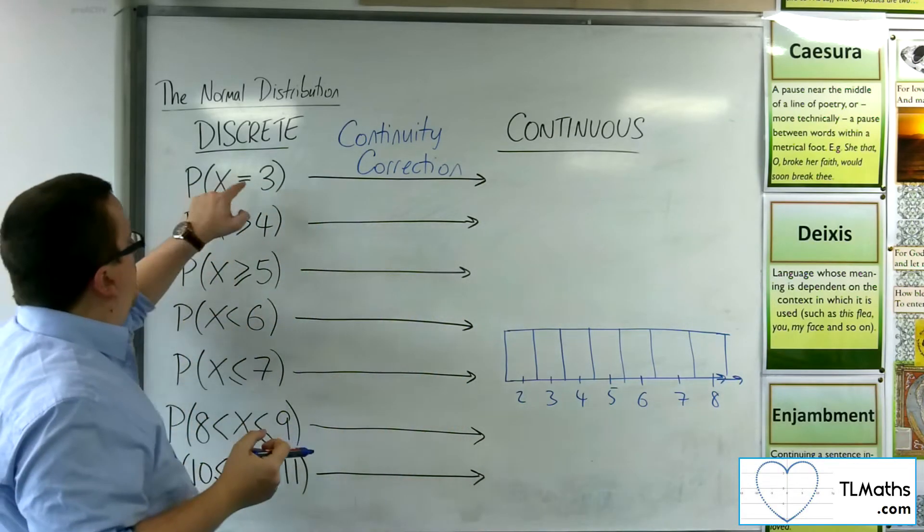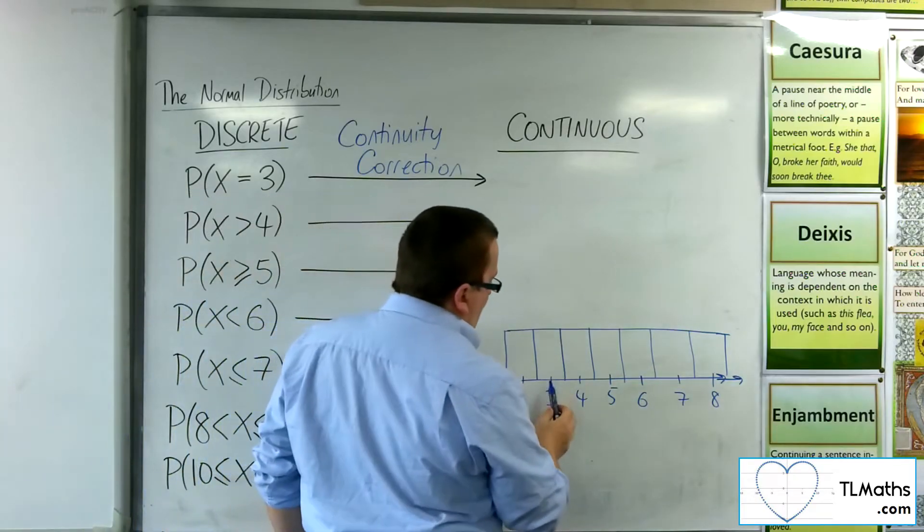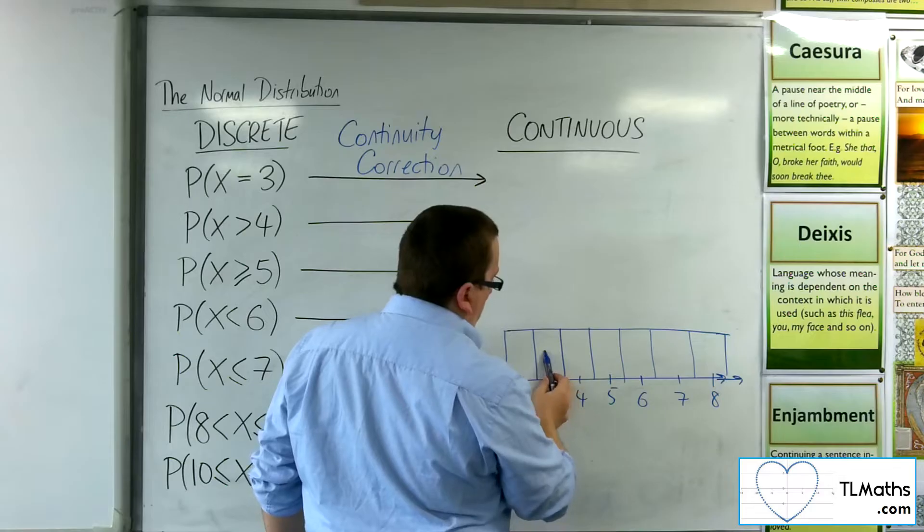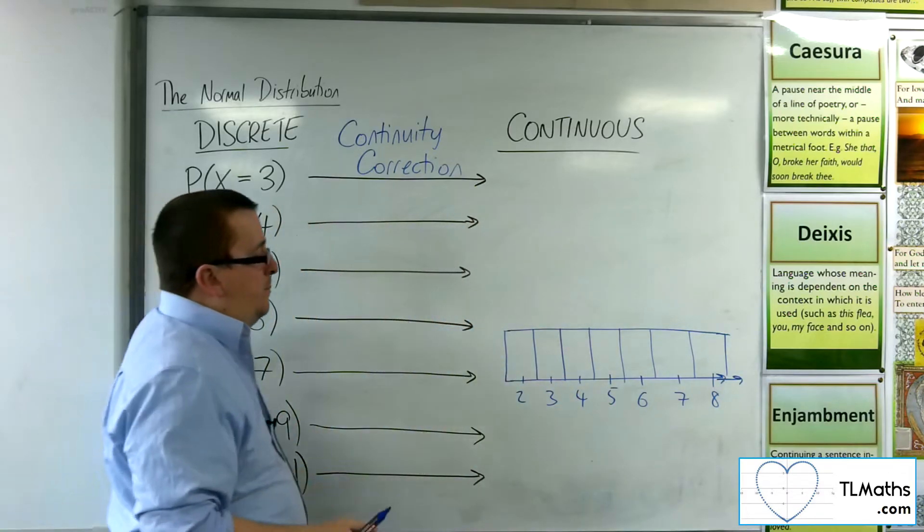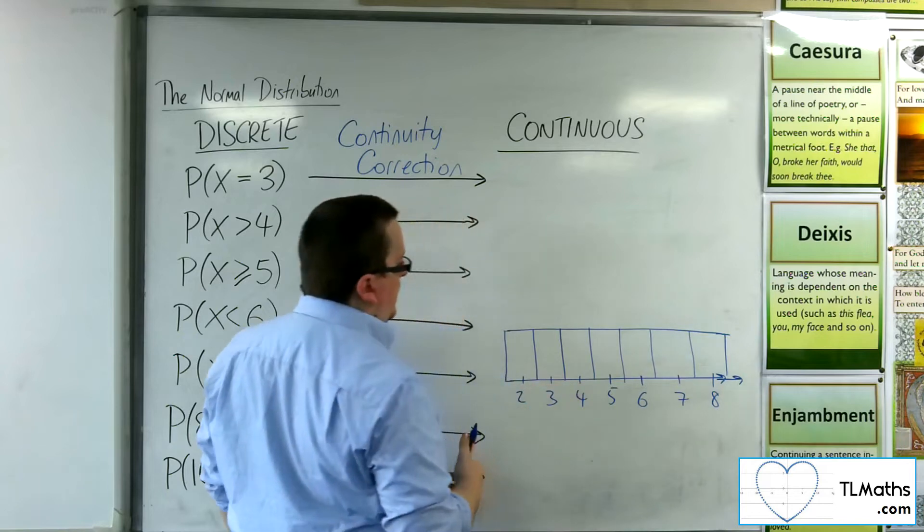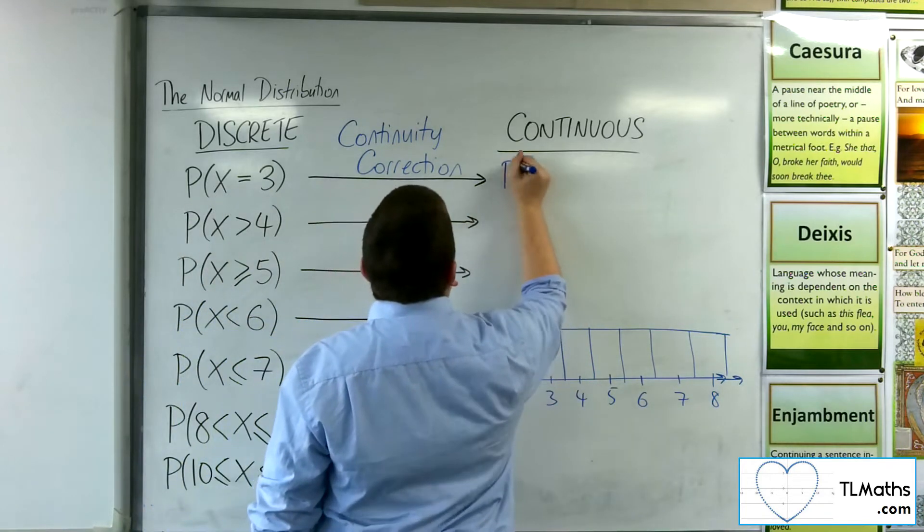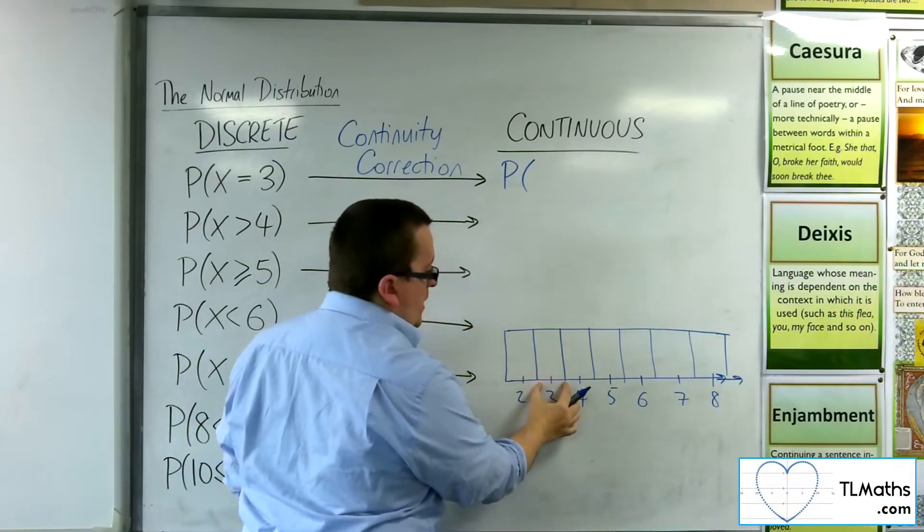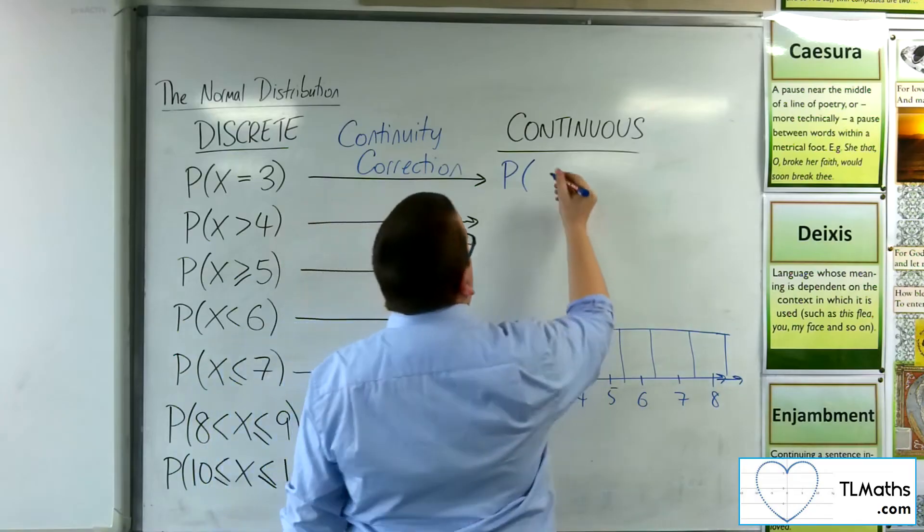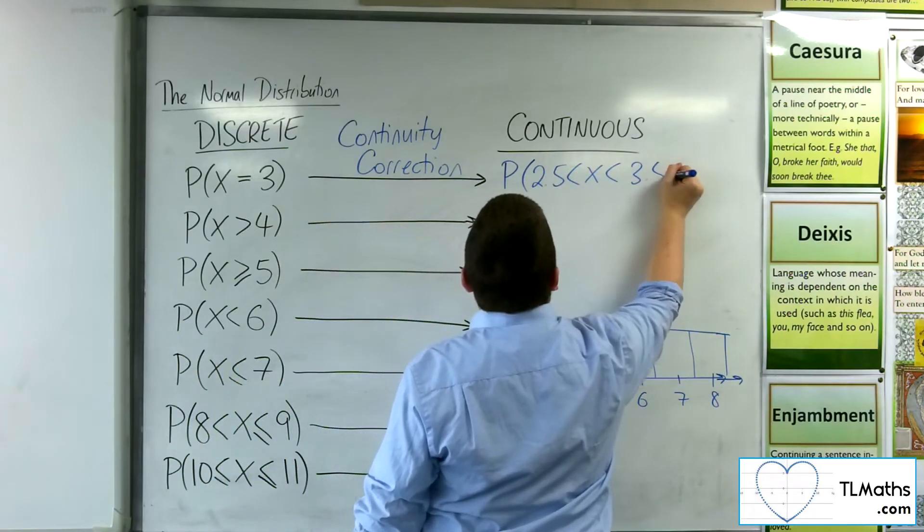Now if I want the probability that X is equal to 3, then X equals 3 is all of this bar, the area of that bar. Each of these bars reaches to halfway between the next. So this would be the same as saying for continuous, I want from 2.5 up to 3.5.